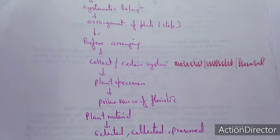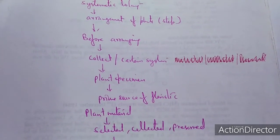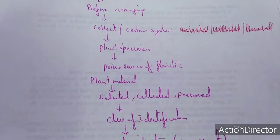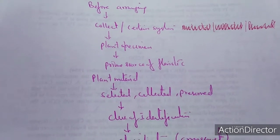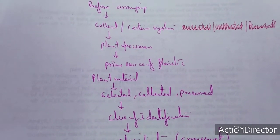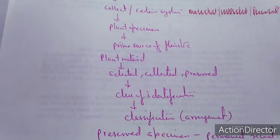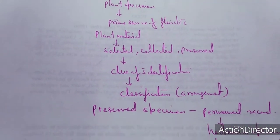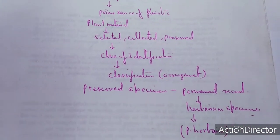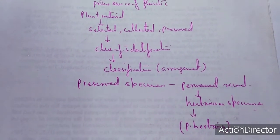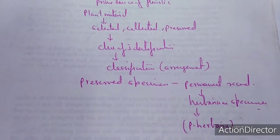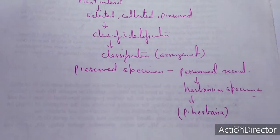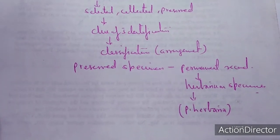The arrangement of plants is a further step. Before arranging them, we need to collect the plant and then arrange them into a certain system. This is technically known as the plant specimen, and plant specimen is the prime source of floristics. Floristic studies cannot be done without plant specimen or the herbarium. The preserved specimen is a permanent record and this is called the herbarium specimen.